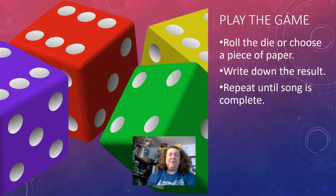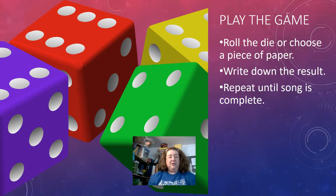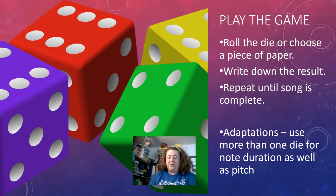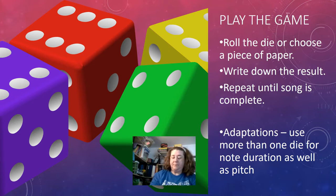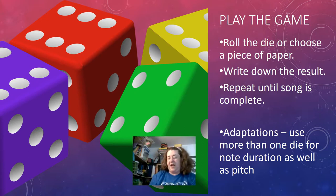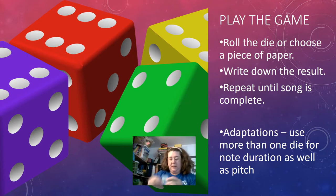Continuing to pull cards: G, then A, then E, then F, then F, then A, then B — I've just used the C diatonic scale at this point. Then G, E, B, D, and so on. I make a random decision that my song is in 6/8 — there is no wrong, you can do anything you want.